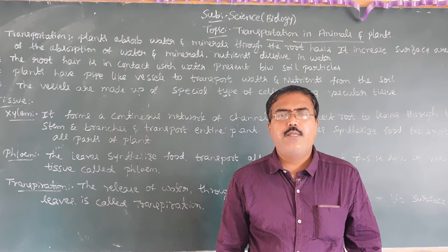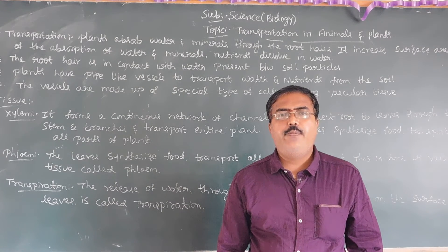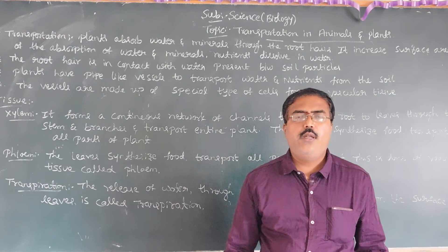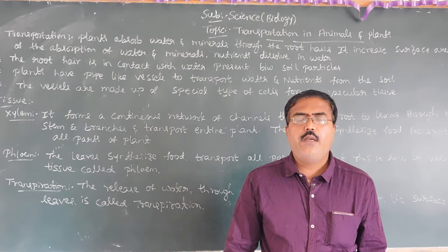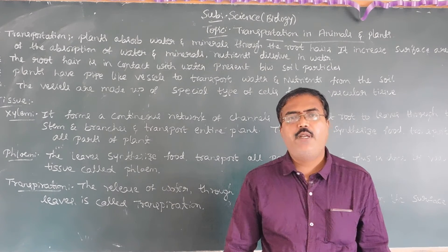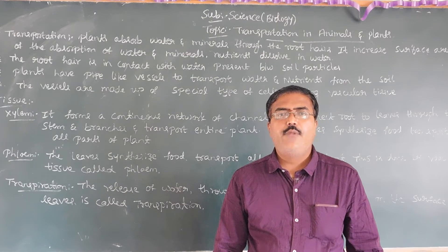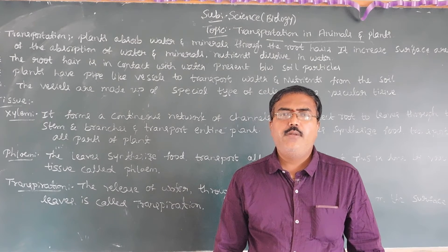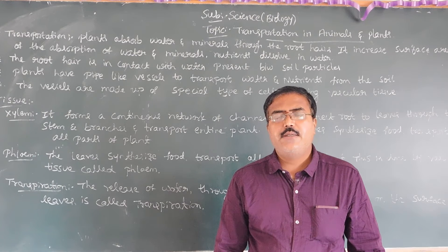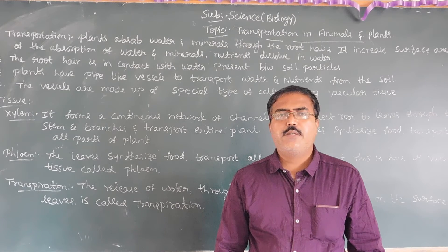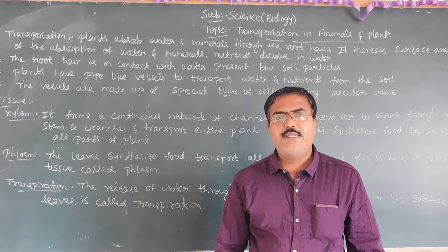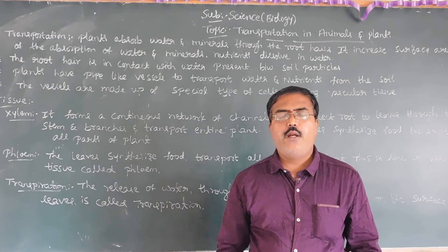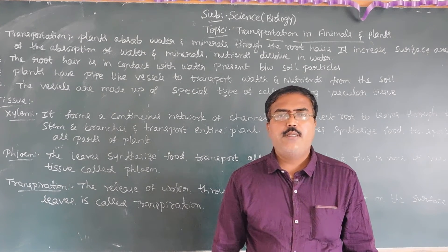Parenchyma has thin-walled cells. Whatever the outer surface of the leaves, the cells are closely arranged with intercellular spaces. Collenchyma has a harder structure compared to parenchyma and is found in the bark or stem region. Sclerenchyma — also called sclereid — has hard, stone-like structures. For example, the coconut shell is an outer part formed by sclerenchyma. Plants living in water can have buoyancy due to thin-walled cells — this is called aerenchyma.